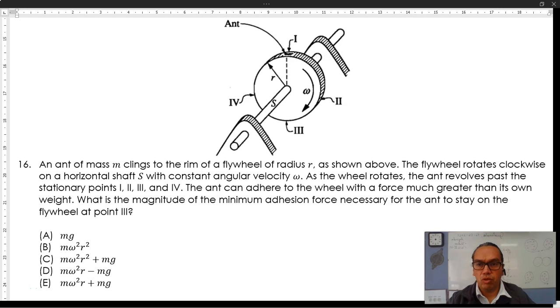16. An ant of mass M clings to the rim of a flywheel of radius R, as shown above. The flywheel rotates clockwise on a horizontal shaft with constant angular velocity omega. As the wheel rotates, the ant revolves past the stationary points 1, 2, 3, and 4.